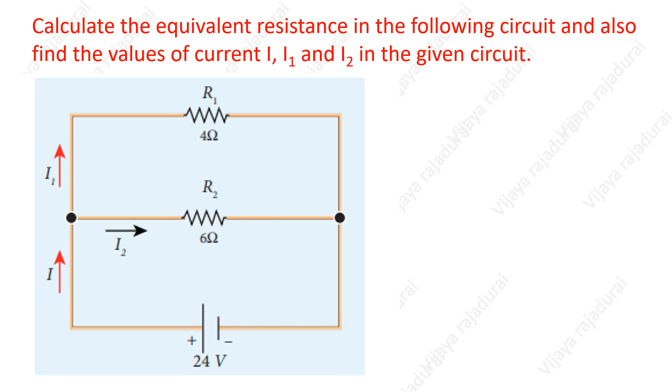Next, we have to calculate I, I1 and I2. For this, we have to use Ohm's Law. Ohm's Law says V is equal to IR. So, I is equal to V by R.